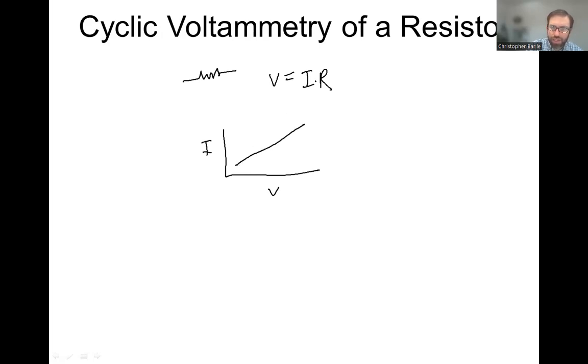And the intercept of that line is going to go through zero, because this equation doesn't have any intercept. So if we wanted to think about negative voltages and negative current, that's how it would look like.